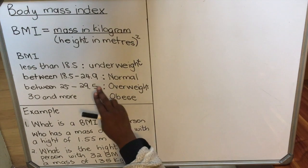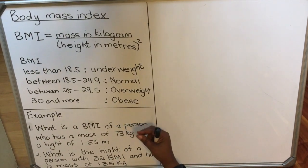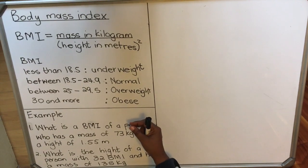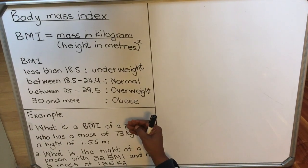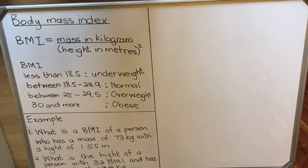When you calculate it and get a value, you'll take that value and compare it to a table that you are given in that particular question, and then you can tell if that person is overweight, normal, or obese. Let's look at some examples on how you calculate body mass index.